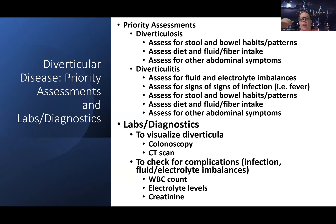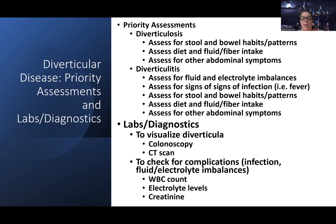My priority assessments for these patients: for diverticulosis — low chance of anything bad happening — I want to assess their stool patterns and bowel habits, how often they're going, whether they're having constipation. I also want to assess their diet: is it low or high fiber, how much fluid are they taking in? I'll probably also assess their activity habits and check for other abdominal symptoms like pain or bloating to see if things are getting worse.